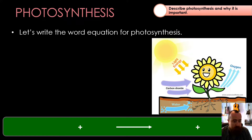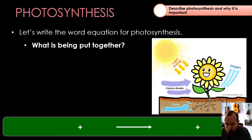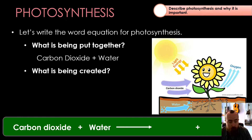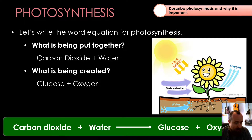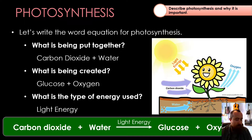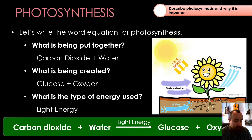So the word equation for photosynthesis would look like this. On the left-hand side, the reactants: carbon dioxide and water. On the right-hand side, what's being created: glucose and oxygen. Above the arrow, the type of energy being used: light energy from the sun. So carbon dioxide plus water becomes glucose and oxygen, using light energy.